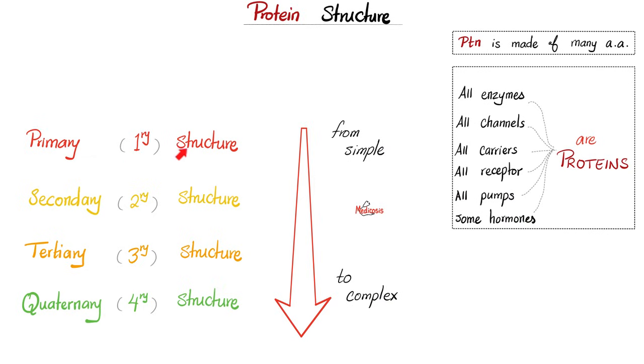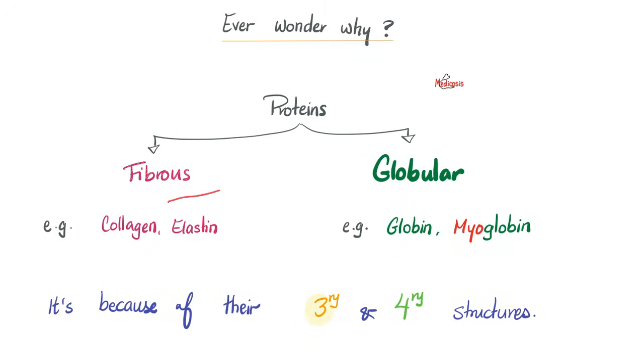Because basically, the protein starts as just a sequence of amino acids called primary structure. And then, as you go from the simple to the complex, you keep folding it and folding it and folding it. For instance, collagen and elastin are fibrous proteins. But globin, hemoglobin, myoglobin, and globulin are globular proteins. Ever wondered why? Because of the tertiary structure. Three-dimensional shape. Folding and folding and folding.